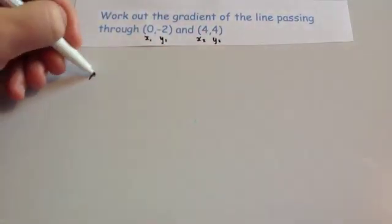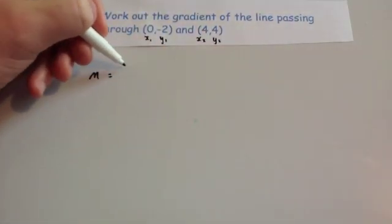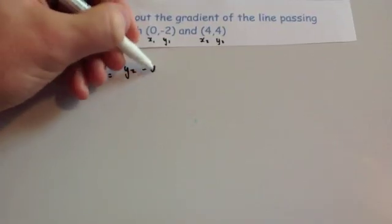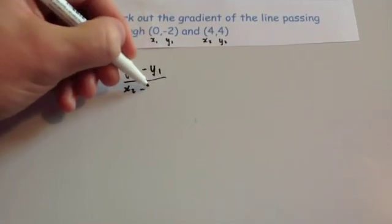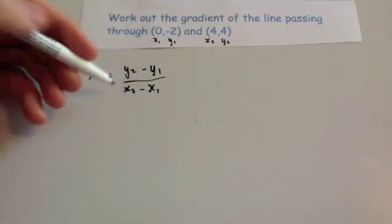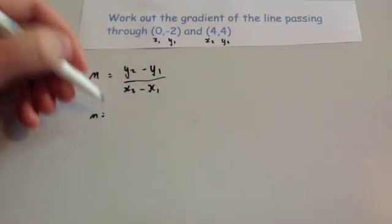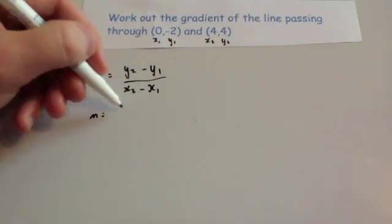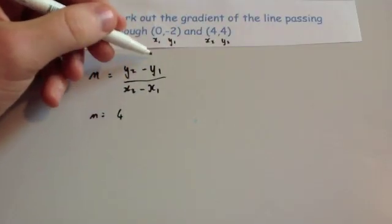And the gradient m, remember m stands for the gradient, is y2 minus y1 over x2 minus x1. So let's just substitute them in. So m equals y2, well y2 is 4.